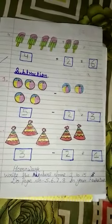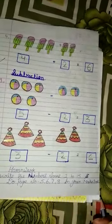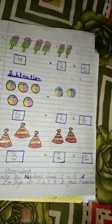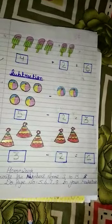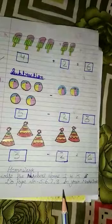Now, note your homework. Your homework is write the number name 1 to 15 in your maths notebook and do page number 5, 6, 7, 8 in your maths book. Thank you.